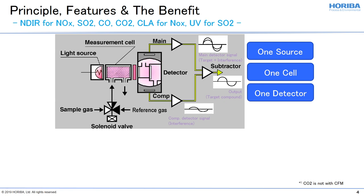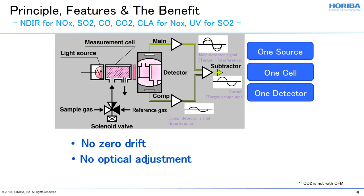Even if a dirty cell exists causing drift, the detector reads it as zero — hence drift is cancelled. This is why Horiba's cross-flow equipped analyzer has zero drift, and therefore no optical adjustment is required.